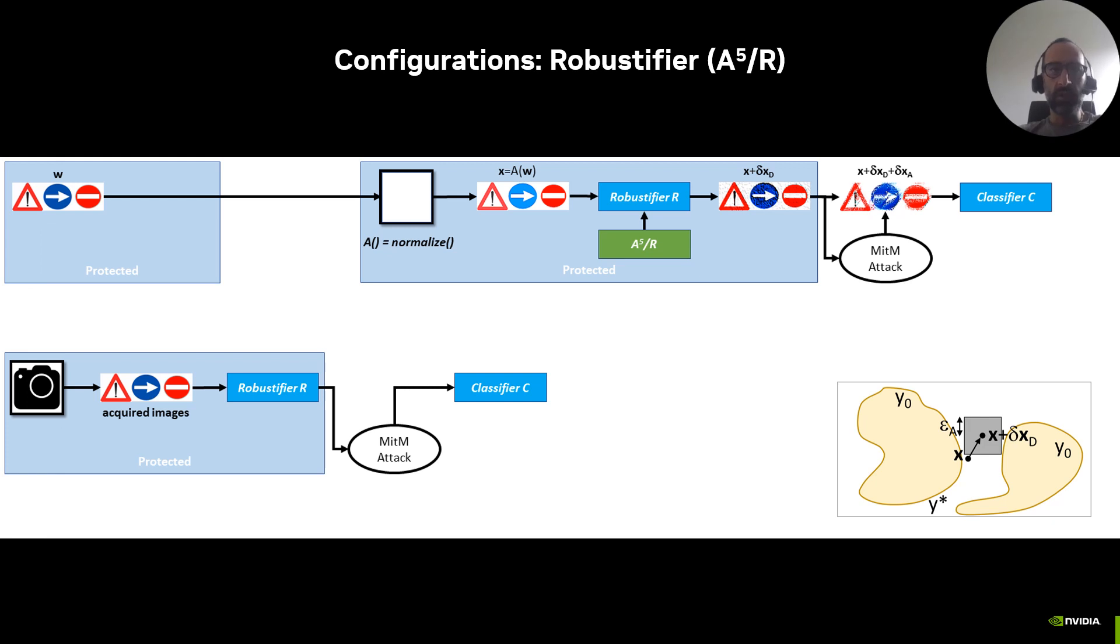A5 can be used to train a robustifier network that runs in a protected environment on the acquisition device. The role of the robustifier is to perform on-the-fly defensive augmentation of the data soon after their acquisition, without any knowledge of the ground truth class.